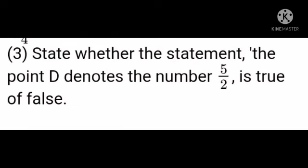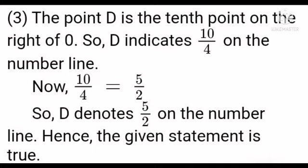Question 3: State whether the statement 'point D denotes the number 5/2' is true or false. Answer: Look at the number scale. Point D is the 10th point on the right of 0, so D indicates 10/4 on the number line. Now, 10/4 divided by 2 equals 5/2. So D denotes 5/2 on the number line. Hence, the given statement is true.